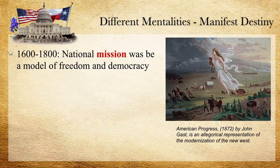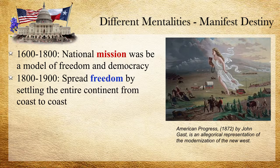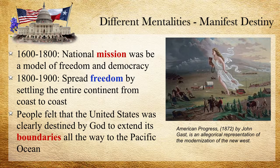There are really two mentalities of Americans and explorers. In the 1600s and 1700s, the national mission was to be the model of freedom and democracy — a beacon of hope and light. But after the 1800s, that changed. Instead of being a model of democracy, people felt we were going to spread freedom by settling the entire continent. We wanted the entire continent to be our home. People in the United States felt they were destined by God to claim the land from coast to coast — this concept became known as Manifest Destiny, and a lot of leaders and regular people bought into it.